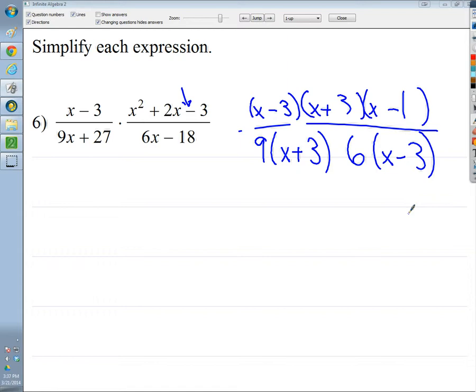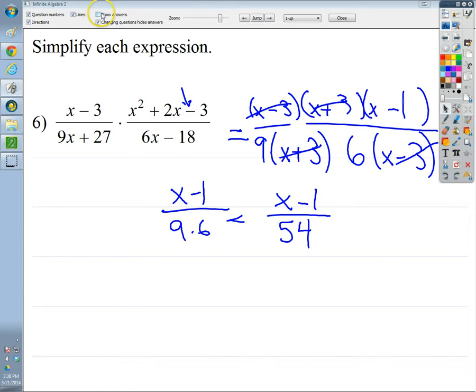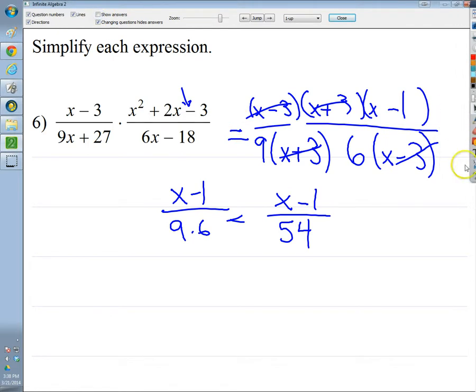Now I need to see if there's anything on top and bottom. This cancels here. This cancels here. So I'm left with x minus 1 over 9 times 6, or x minus 1 over 54. You know, it's basically just your simple factoring. It just looks more advanced. It's really not.